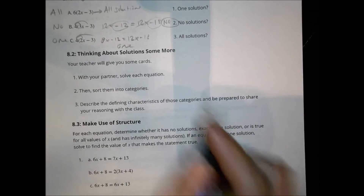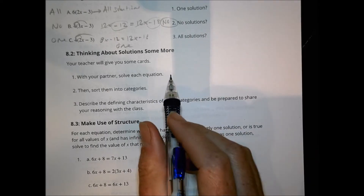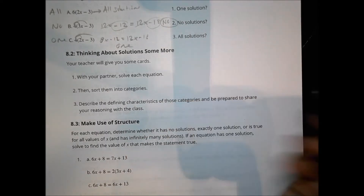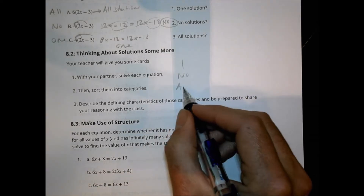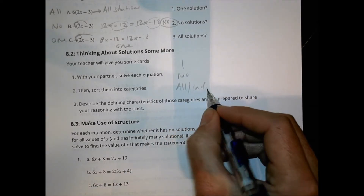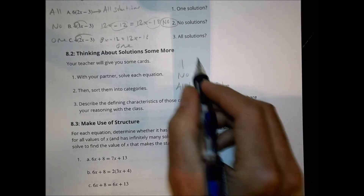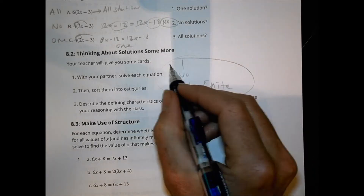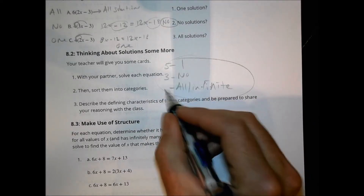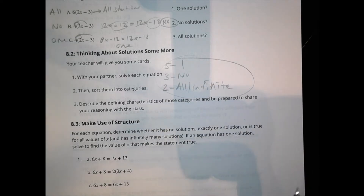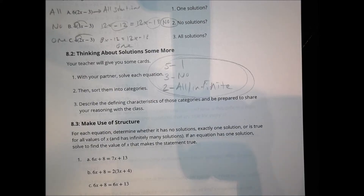In class, your teacher gave you some cards with various equations. You have to sort them into categories: one solution, no solution, or infinite solutions. A little hint: there are five with one solution, three with no solutions, and two with an infinite number.